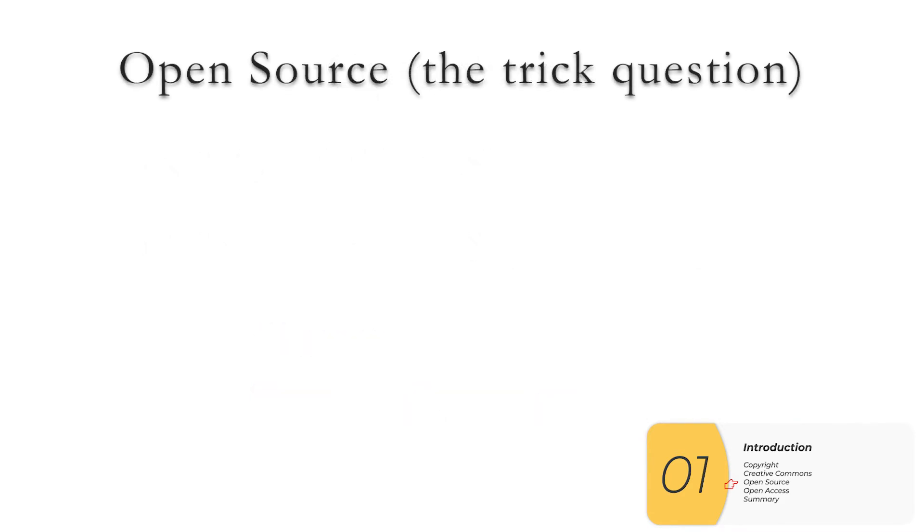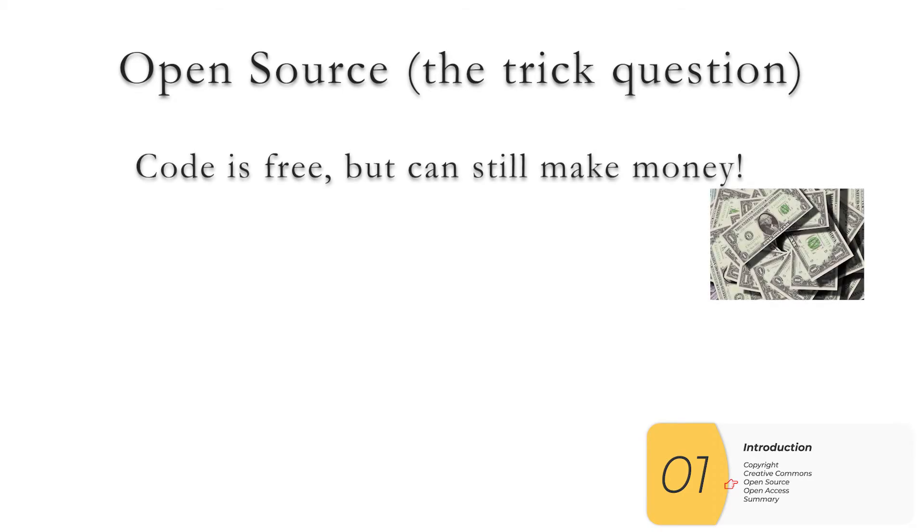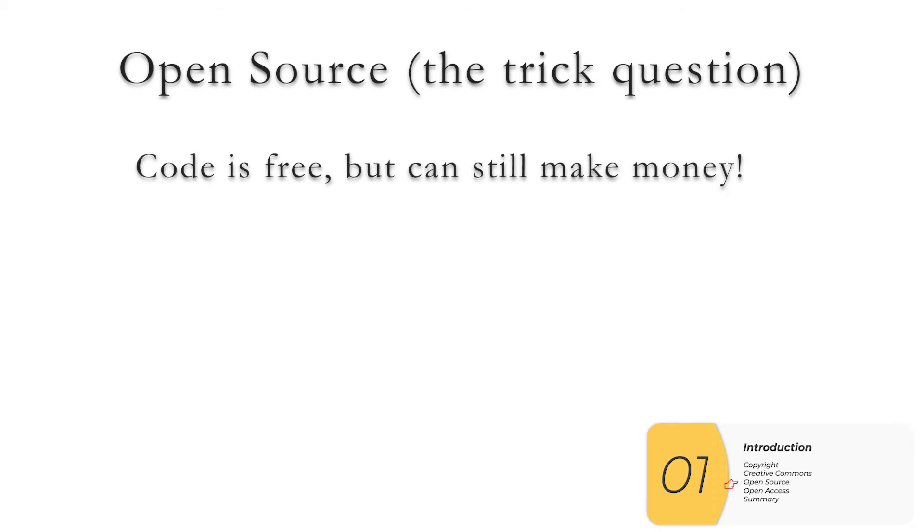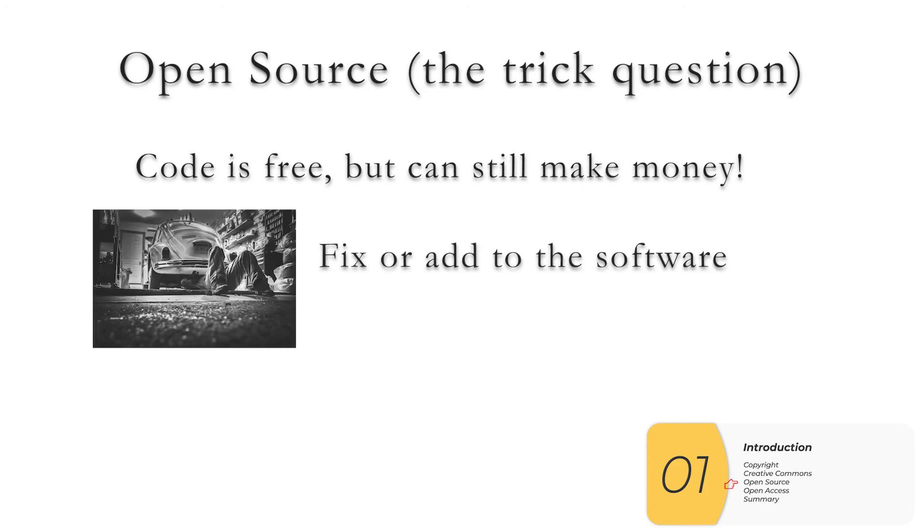There is a trick question that can show up about open source. And that is this: even though the code is free, companies can still make money. And how does that happen?